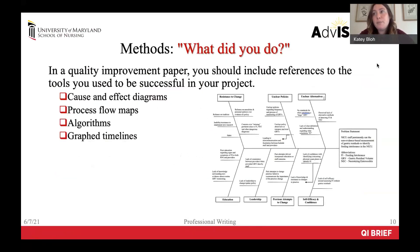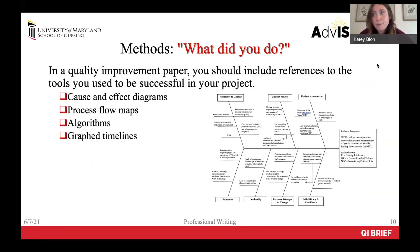When preparing to implement your project, you utilized many quality improvement tools. The methods section is where you describe the tools and how they guided your project. For example, you can include your updated theoretical framework diagram, your fishbone diagram, process flow maps you created, or timelines you graphed. If you collected data from a computer charting system or used an established survey, you should discuss that here as well. I highly recommend looking at the Carlin et al. article referenced on slide 4 for ideas about incorporating a variety of QI tools into your manuscript.